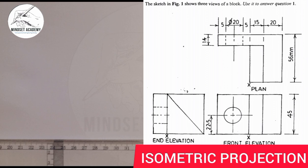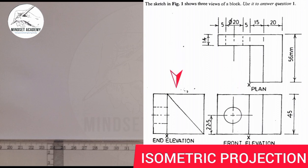If you look closely, you'll discover that this is the plan, this is the front elevation, and this is the end view — all together. We want to assemble this component and reproduce it in isometric projection, making point X the lowest point of the construction.